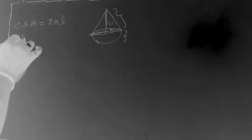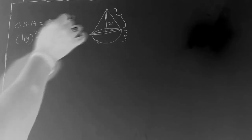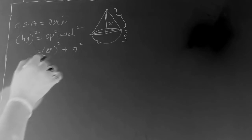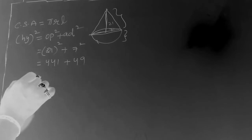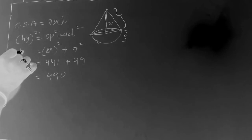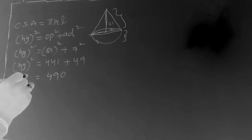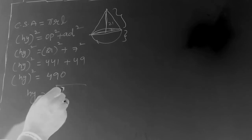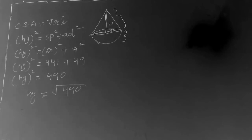By Pythagorean theorem, hypotenuse² = opposite² + adjacent². Here the opposite side (height) is 21 and adjacent (radius) is 7. So l² = 21² + 7² = 441 + 49 = 490. Therefore l = √490. Since 490 is not a perfect square, we use the dot method to find its value up to two decimal places.